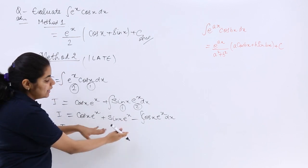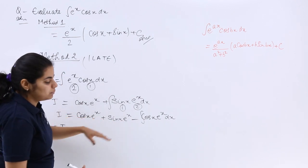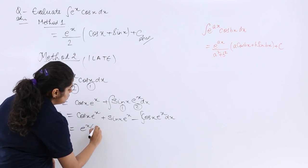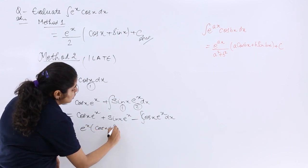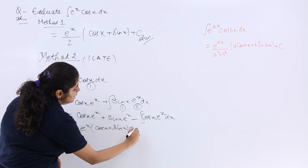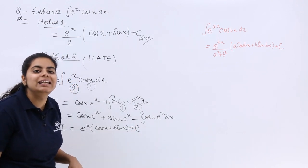Cos x e raised to the power x plus sin x e raised to the power x. Let me take out e raised to the power x common, it is cos x plus sin x plus c, you can go with the integration constant.